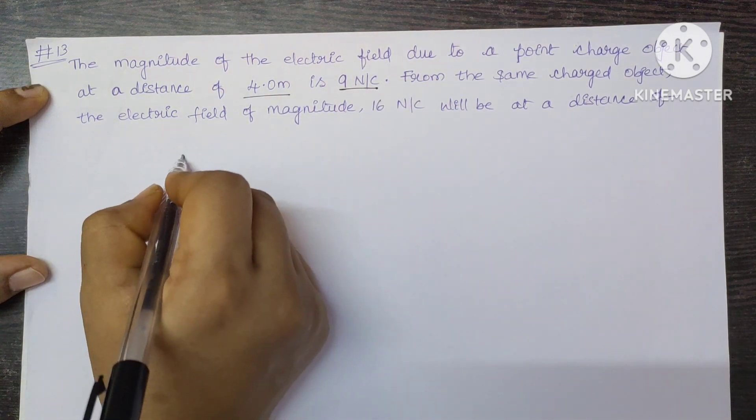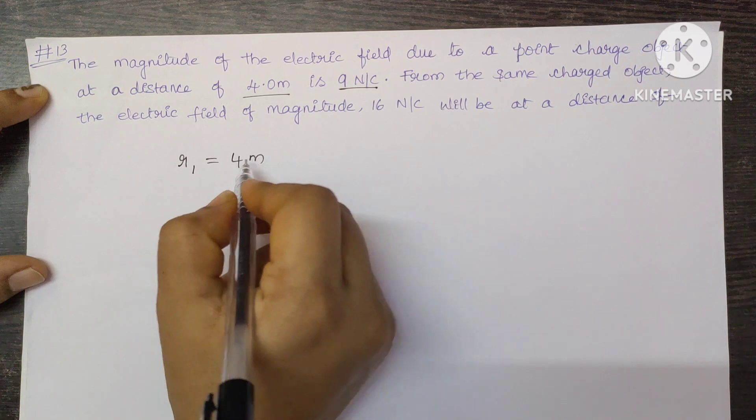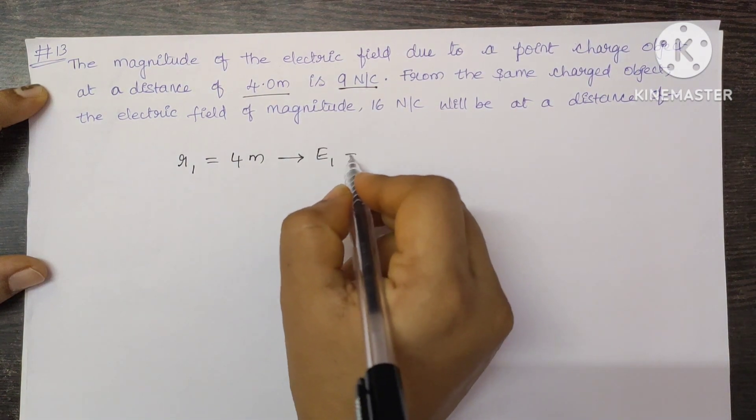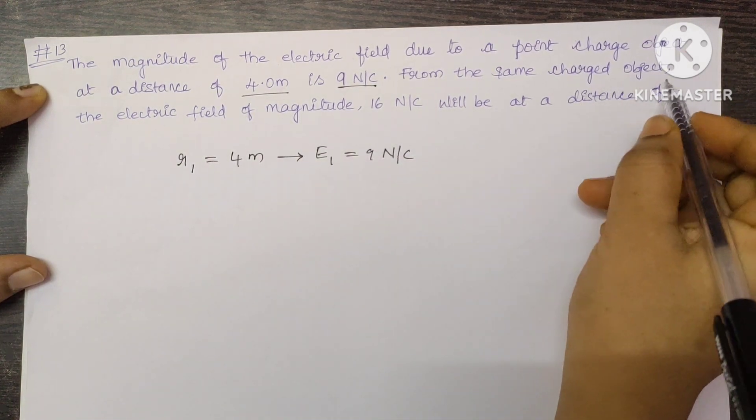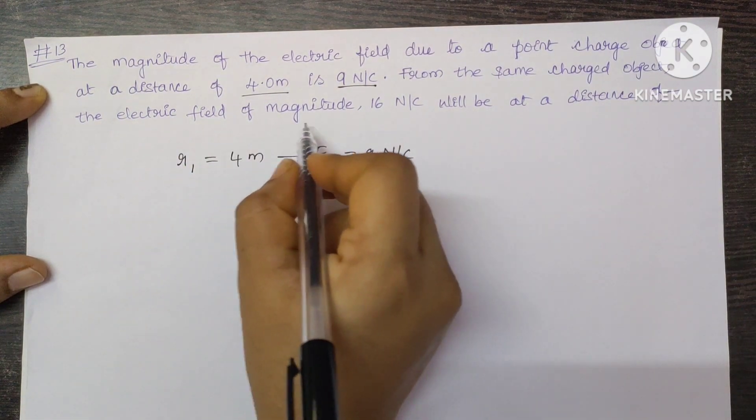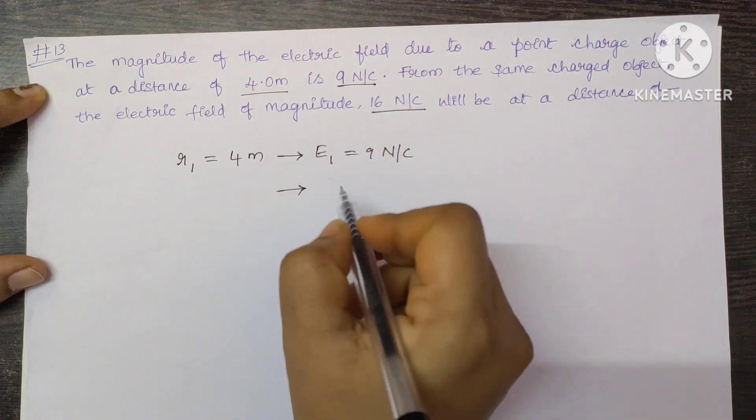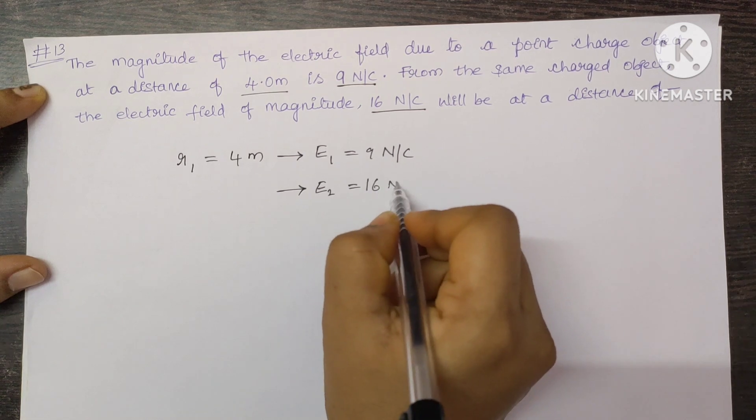So here distance is given, let's say R1 which is equal to 4 meters, and corresponding to this the electric field is given, let it be E1 which is equal to 9 Newton per Coulomb. From the same charged object, E2 is equal to 16 Newton per Coulomb.